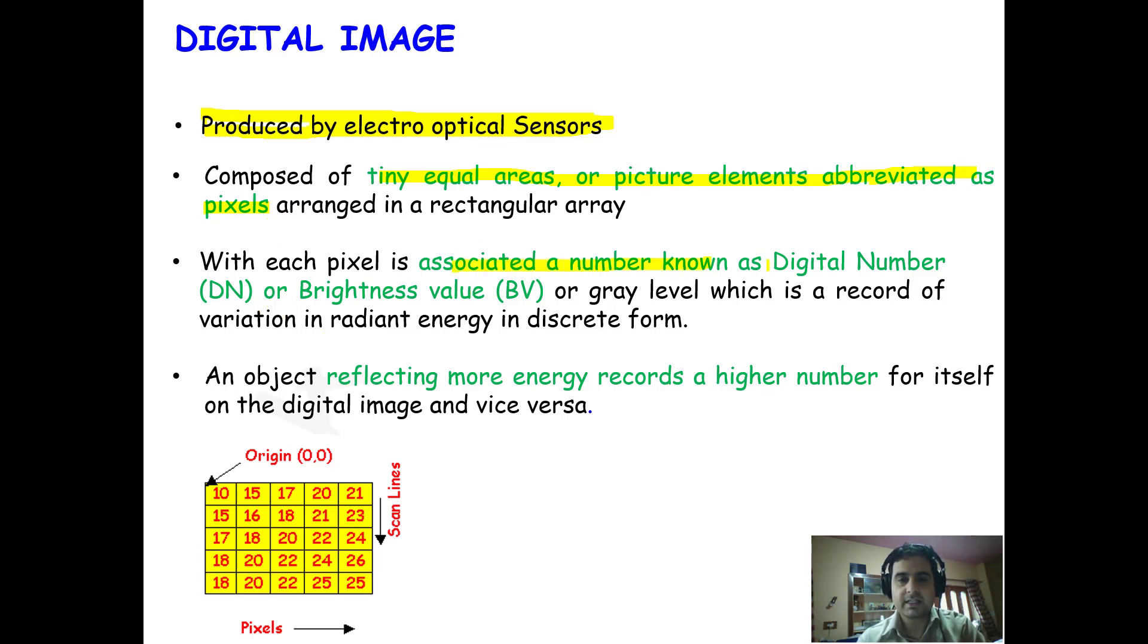This number is called the digital number or brightness value. It represents the level of energy. Higher the value, higher the reflecting energy, higher will be the digital number or brightness value. A lower value of 10 represents lower reflecting energy, and a higher value of 26 represents higher reflected energy.